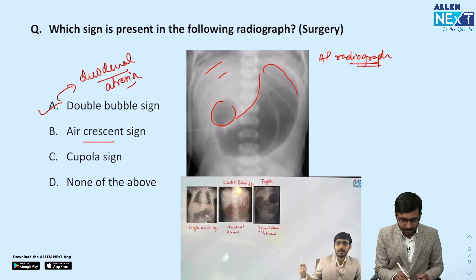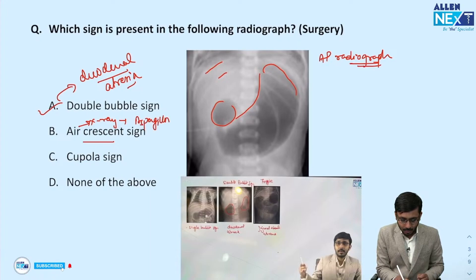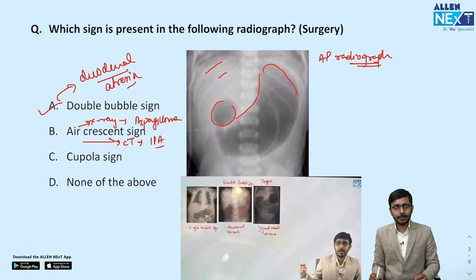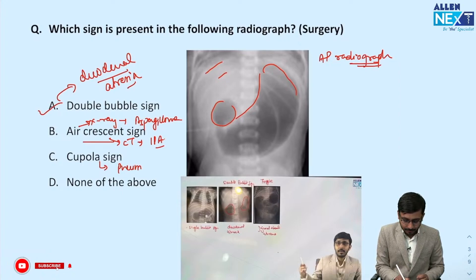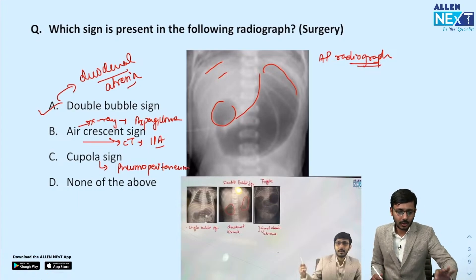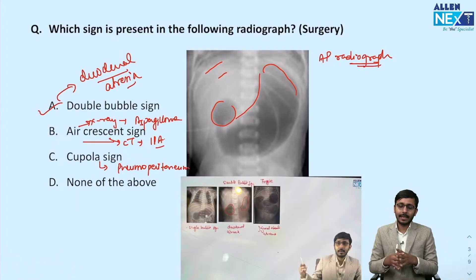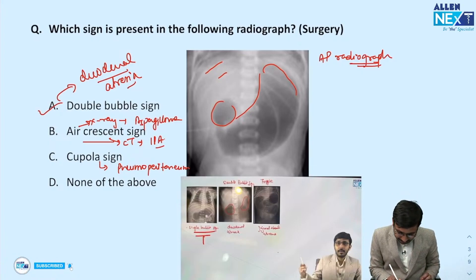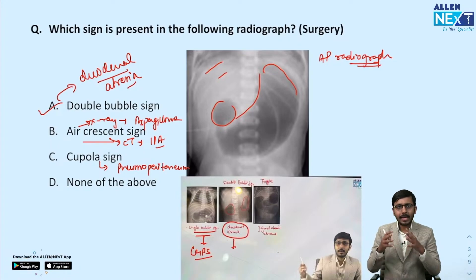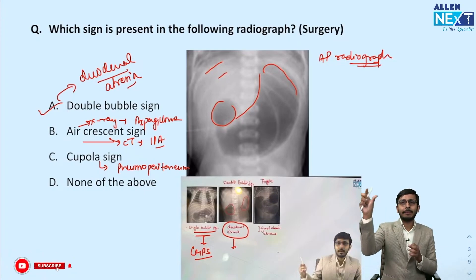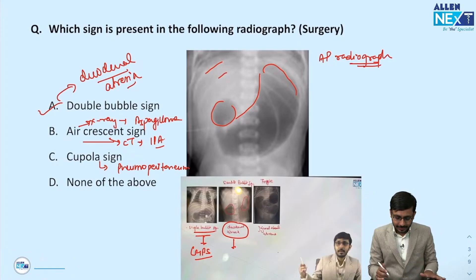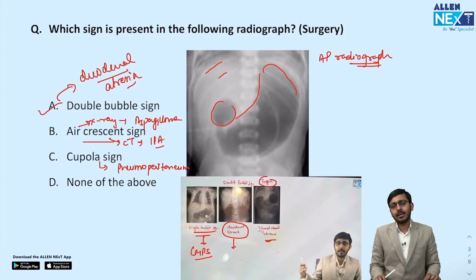Air crescent sign seen on X-ray is seen in aspergilloma, and on CT it is seen in invasive pulmonary aspergillosis. Cupola sign is seen in pneumoperitoneum on an X-ray abdomen. Single bubble sign is seen in CHPS, double bubble sign in duodenal atresia, and if there is jejunal atresia you see three bubbles — one in the stomach, one in the duodenum, one in the small intestine — that is the triple bubble sign.